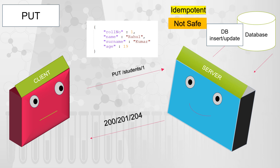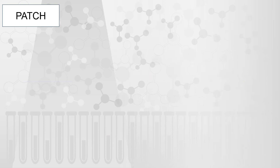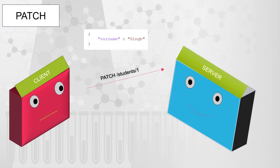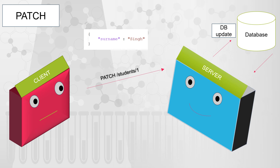The next method is PATCH. PATCH is used to partially update the resource. If the client wants to update only the surname of the student, it can send a PATCH request with a payload containing only the surname. The server will update the entry in the backend database and send back the HTTP status code to the client.